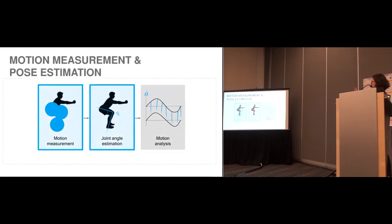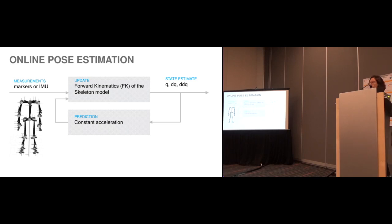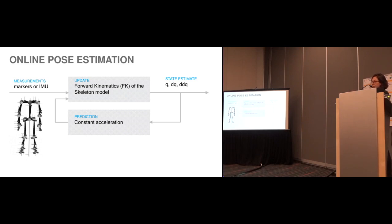Let's start with motion measurements and joint angle estimation. All of the work done in the adaptive systems lab is realizing this idea of online pose estimation. It's a very simple, quite powerful method. We consider a simple filter-based framework that relies on a kinematic model. Using this model, we can bring together our measurements — either Cartesian positions from the mocap system or linear accelerations and angular velocities from the IMU. Based on our filtering framework, the measurements, and the kinematic model, we can predict a state made of angles, angular velocity, and angular acceleration, and then continue the loop.